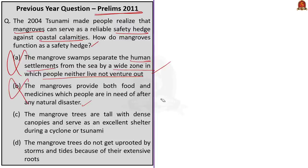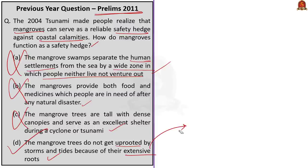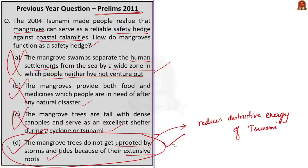Option C states mangrove trees are tall with dense canopies and serve as excellent shelters during a cyclone or tsunami — this is also incorrect because mangroves vary in size, sometimes being short shrub-like trees and sometimes reaching more than 60 meters, and this feature does not enable them to protect people from cyclones or tsunamis. Option D states that mangrove trees do not get uprooted by storms and tides because of their extensive roots, and these help mangroves reduce the destructive energy of a tsunami. This is the correct statement. It is said that around 90% of the energy of a tsunami is reduced by even 100 meters of dense mangroves.